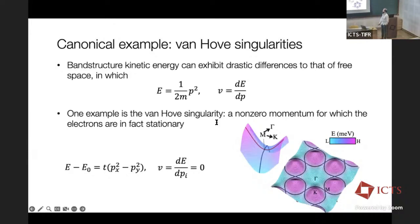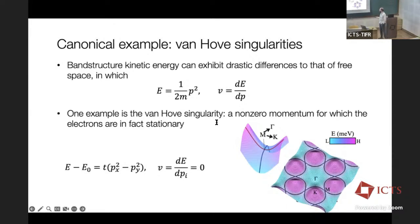A canonical example of how kinetic energy can be strange in solids is that of the Van Hove singularity — a saddle point in the electronic dispersion at which the group velocity vanishes, something completely inconceivable in the vacuum of space. The vanishing of the group velocity results in a divergence of the density of states and a massive enhancement of interaction effects. There's a rich and interesting set of instabilities of a system whose Fermi surface is located near such a point in the electronic structure.